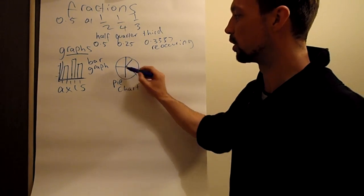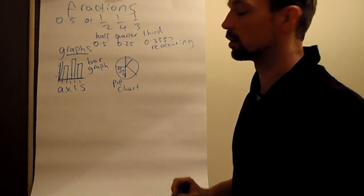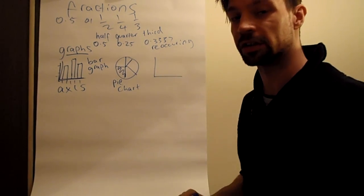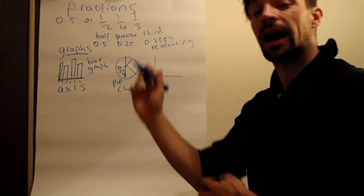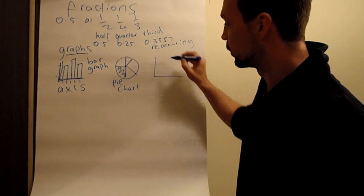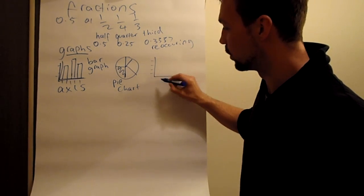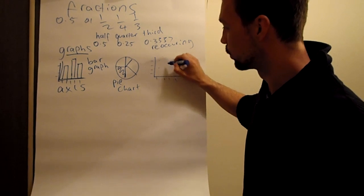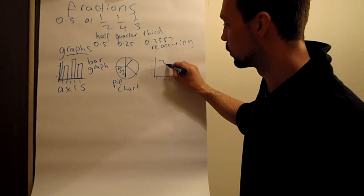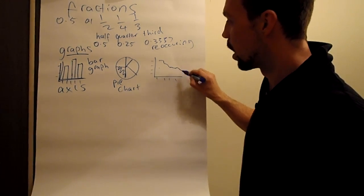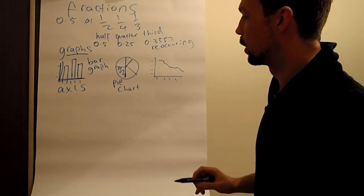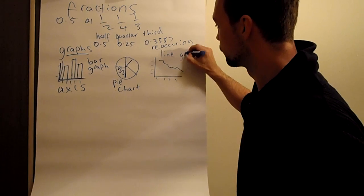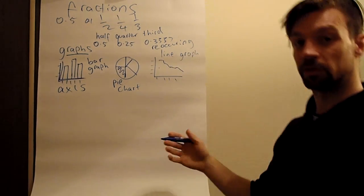And so this represents 25% and things like this. And the third one, again we have two axis, and it's called a line graph. So you have again different numbers, different data along the top and bottom, and you have different points. And usually these show a flow of time. And this is a line graph.